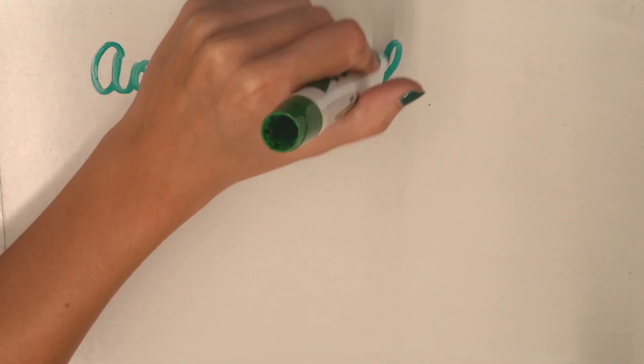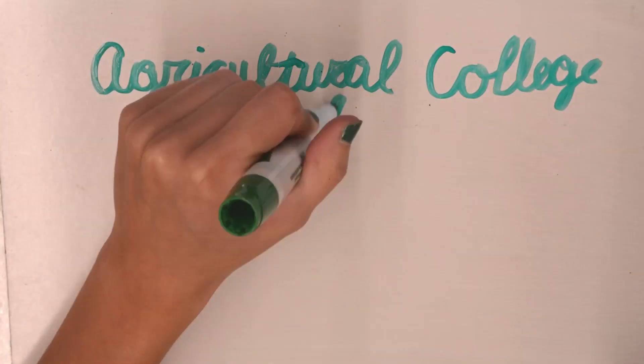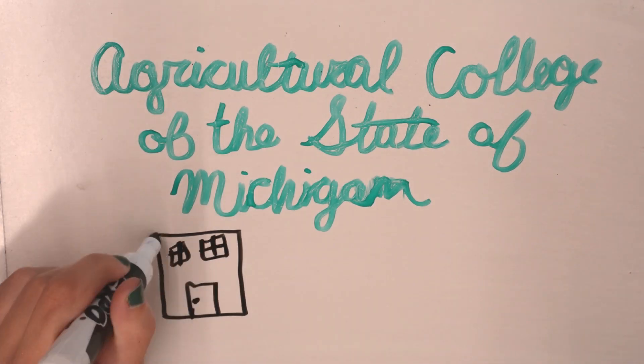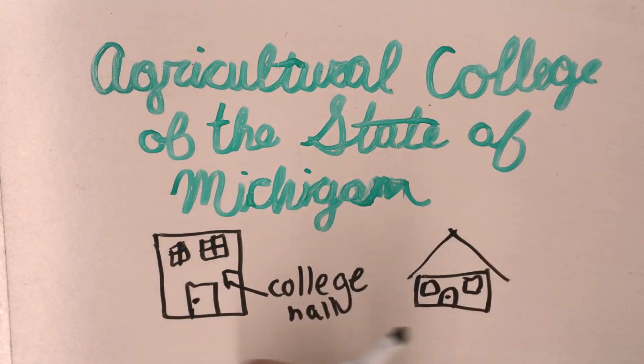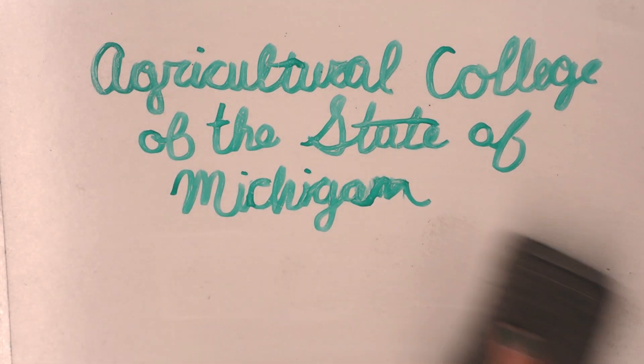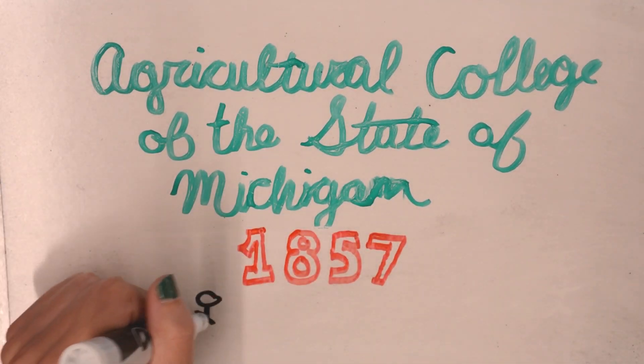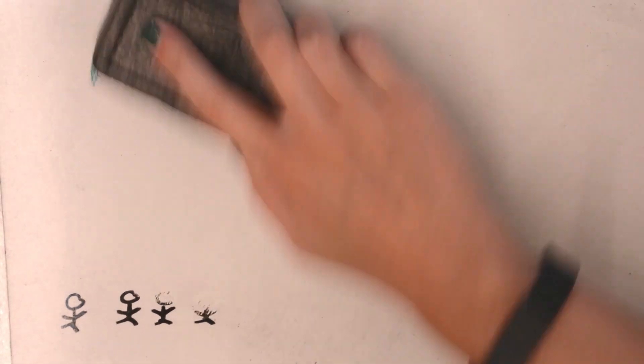MSU, or the Agricultural College of the State of Michigan, as it was originally called, was founded on February 12, 1855 as the nation's pioneer land-grant college. It took two years to build the two-building campus before classes started in 1857 with 63 students and nine faculty and staff members.